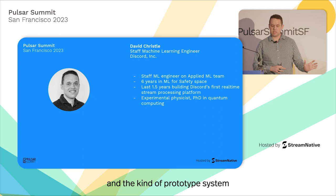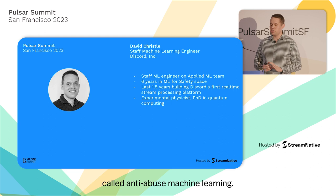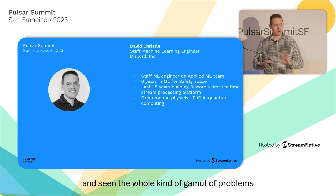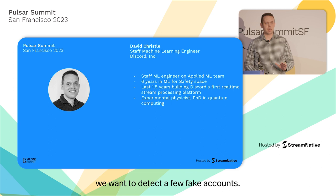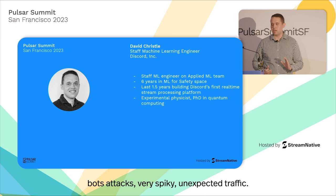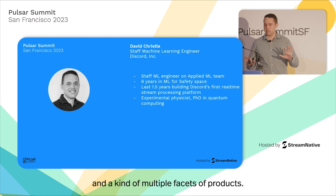Our team is largely split into two focus areas: safety and personalization. Most of my work and the prototype system we built here is oriented for safety machine learning, or sometimes called anti-abuse machine learning. I have about six years of experience in this space, previously at LinkedIn and Cash App, seeing the whole gamut of problems you have to tackle with machine learning. We're operating at a very large scale — millions of accounts — and we have to deal with bot attacks and very spiky, unexpected traffic, platform-wide.